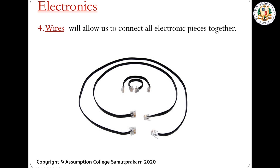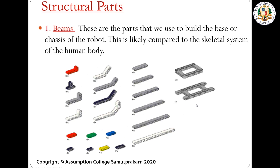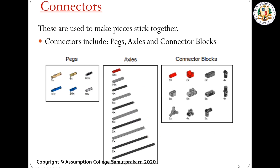Next we have flat black wires, used to connect all the electronic pieces together. For example, to connect the motors to the brick controller, we use these wires. Next we have the structural parts — we have the beams. These are the parts we use to build the base or chassis of the robot, comparable to the skeletal system of the human body. Just like humans have bones, robots have what we call the chassis. Even cars and trucks have their own chassis.